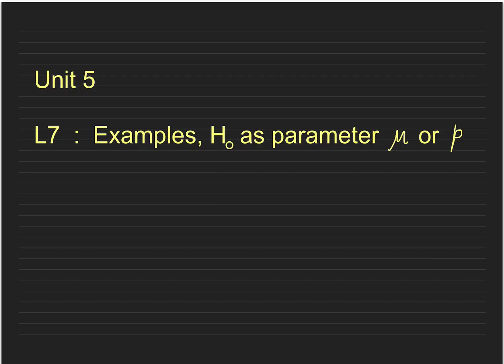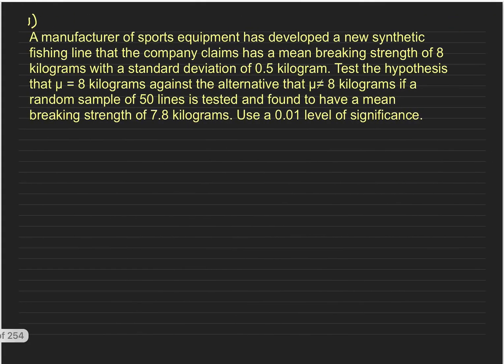Hello everyone, this is the fifth video on inferential statistics. In this video we discuss some examples, particularly when H0 has parameter mu. Consider this example: a manufacturer of sports equipment has developed a synthetic fishing line that the company claims has a mean breaking strength of 8 kg with a standard deviation of 0.5 kg. Test the hypothesis mu equals 8 kg against the alternate hypothesis mu is not equal to 8 kg. The null hypothesis is mu equals 8 and alternate hypothesis H1 is mu not equal to 8.